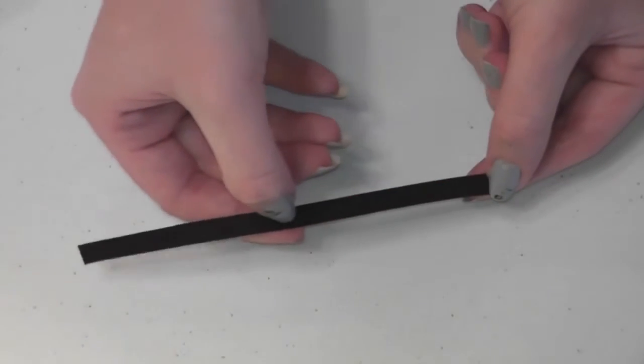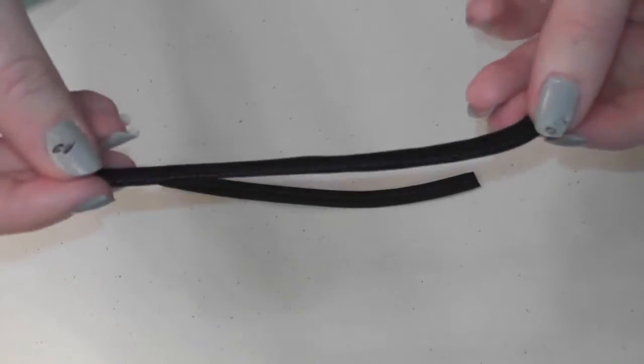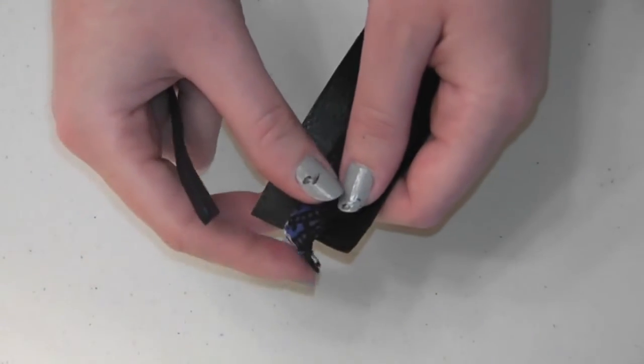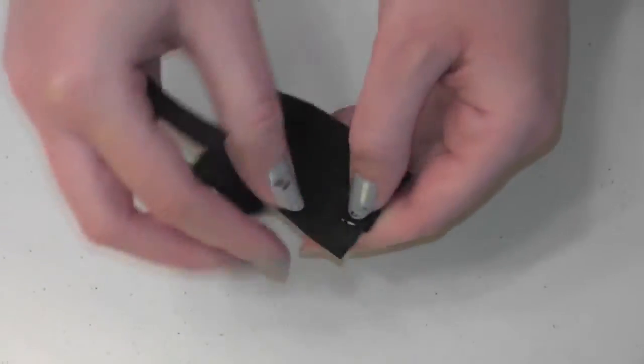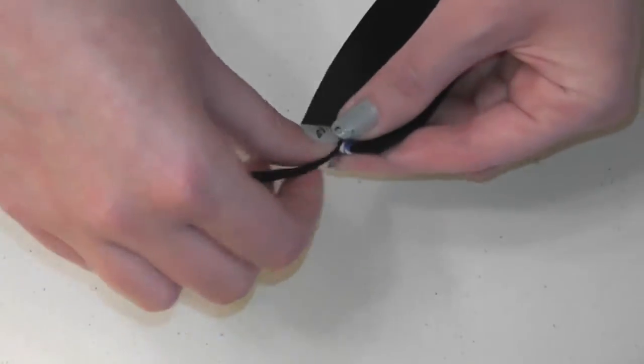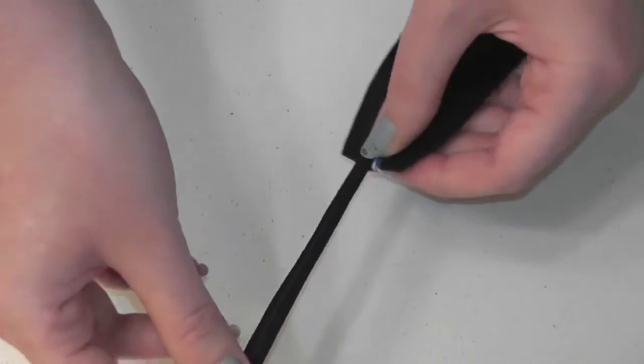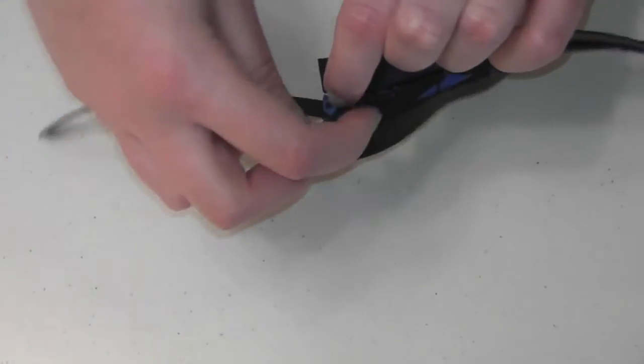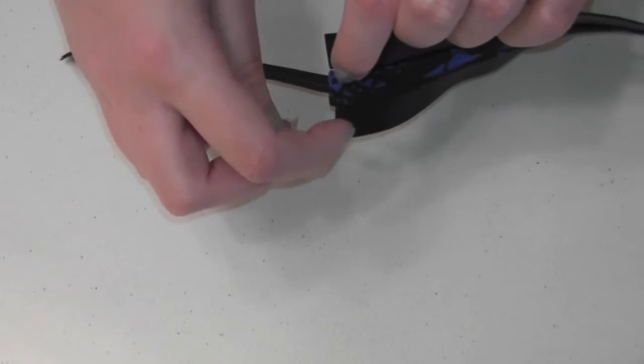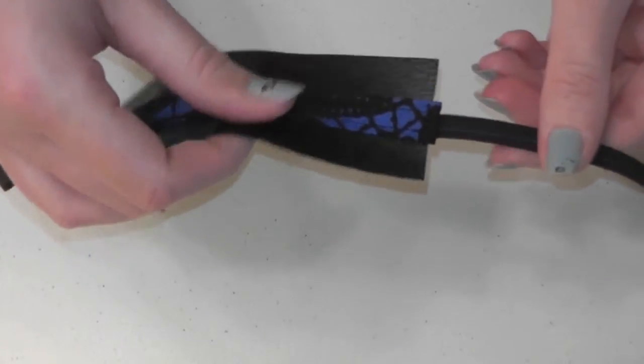Stitch a line of topstitching all the way across each tie to keep the bias tape from unfolding. To sew each tie on, fold over one end of the excess cotton fabric to the back of the bracelet and lay a tie on top of it, so now both the excess fabric and the tie are on the back side of the bracelet. Sew these layers in place, stitching several times for sturdiness.